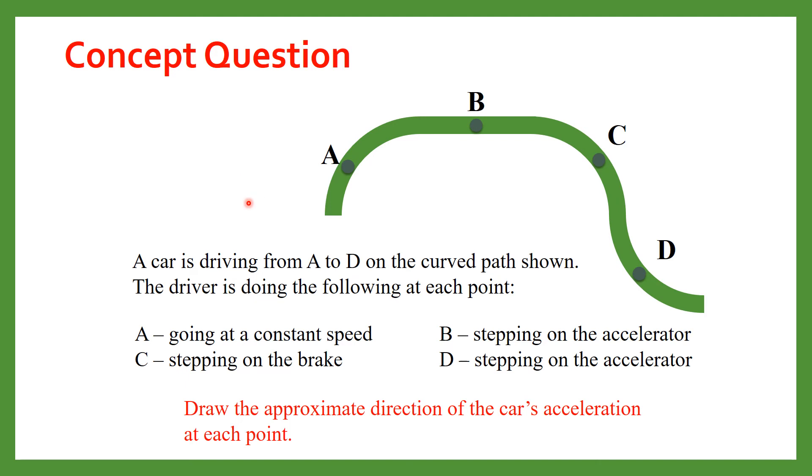Now here is a concept question for you. Suppose a car is driving from this point A and following this path up to the point D. And this is the curved path and the driver is going according to these instructions at A it is moving at constant speed at B it is tapping the accelerator at C it is stepping on the brake and at D again it is stepping on the accelerator. We need to draw the approximate directions of the car's acceleration at each point.